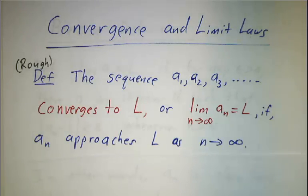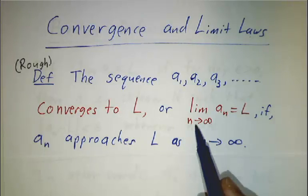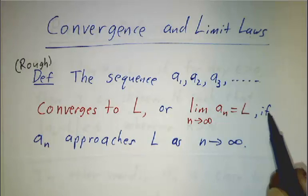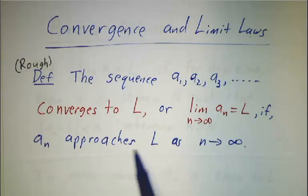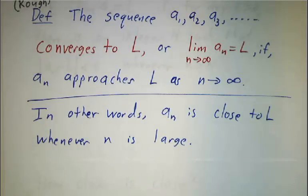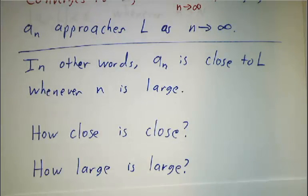We'll start with a rough, hand-wavy definition. We say that a sequence a1, a2, a3, and so on converges to L — and 'converges to L' and 'the limit as n goes to infinity of a_n equals L' mean the exact same thing — if a_n gets closer and closer to L as n goes to infinity. In other words, whenever n is large, a_n has got to be close to L. But the question is: how close is close, and how large is large?